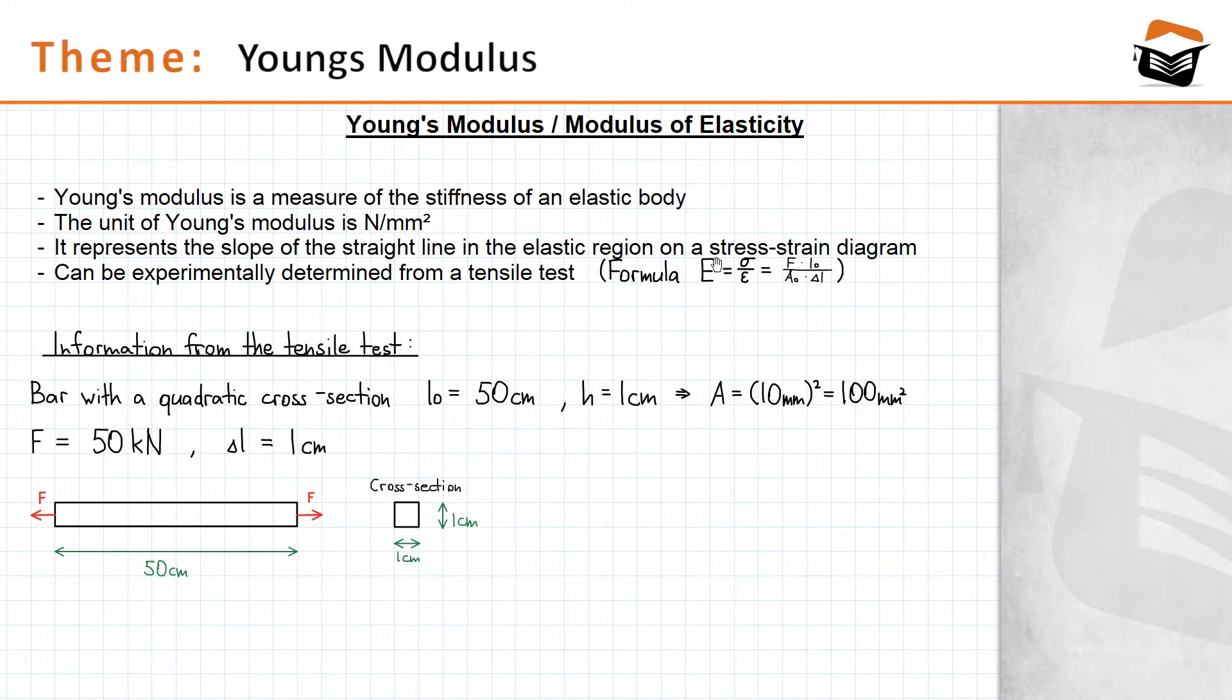If you have a stress-strain diagram, Young's modulus can be interpreted as the slope of the straight line on the stress-strain diagram in the elastic region. So again, the straight line in the elastic region on a stress-strain diagram basically has the slope that corresponds to the value of Young's modulus.